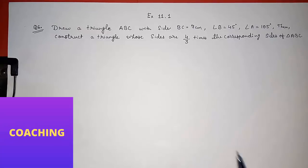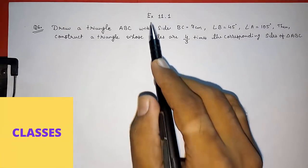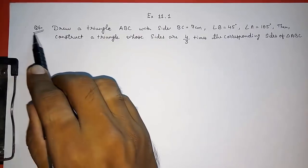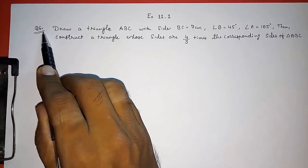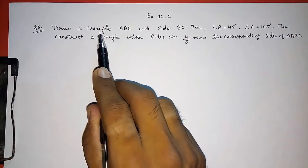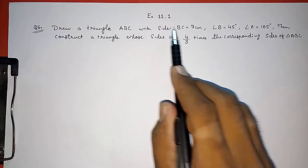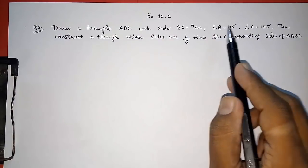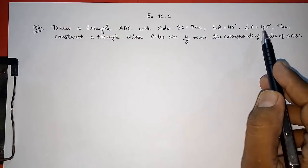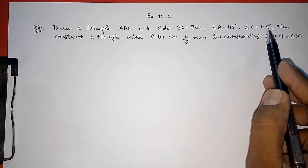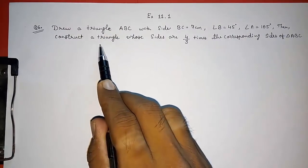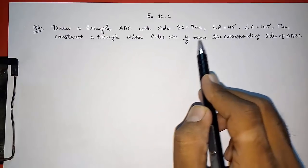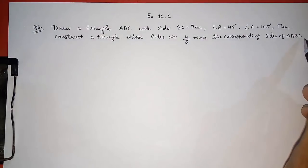Hello friends, today we are going to solve CBSE class 10th exercise 11.1, question number 6. Draw a triangle ABC with side BC equal to 7 centimeter, angle B 45 degree, angle A 105 degree, then construct a triangle whose sides are 4 by 3 times the corresponding sides of that triangle.